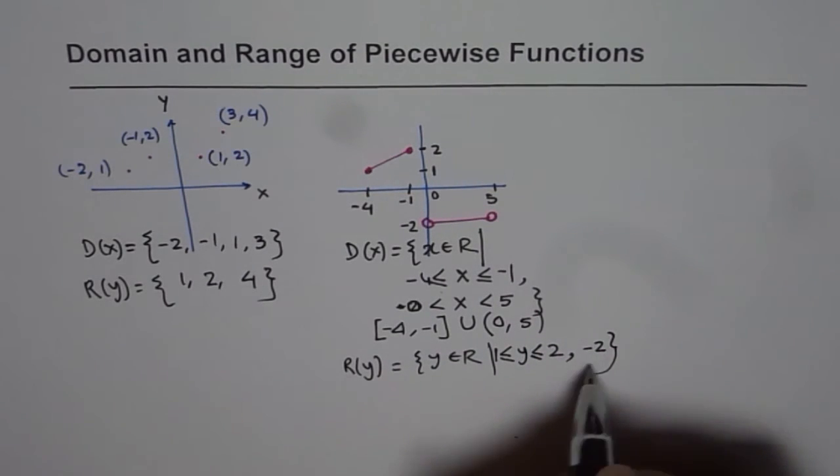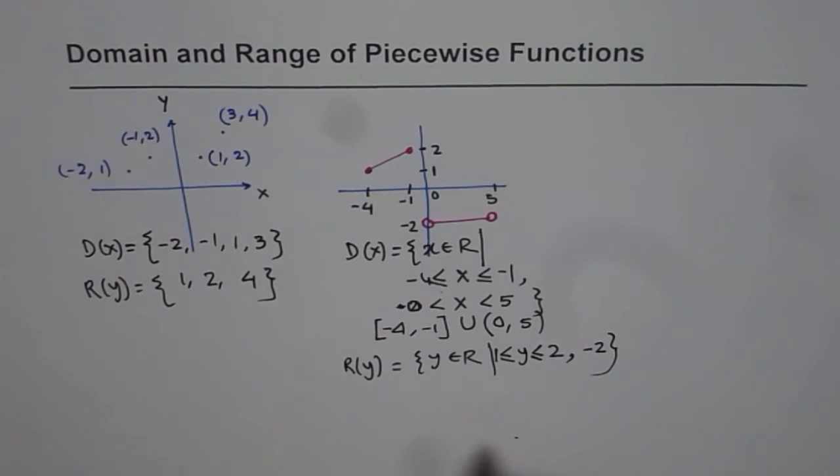So these are the values of y which are part of range for the given function. That is how we can write domain and range. At times, domain and range can be written as a combination. This is what I wanted to highlight with the help of this example.